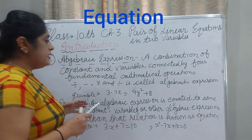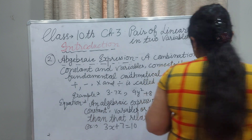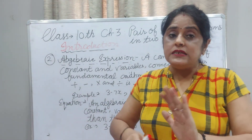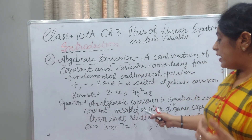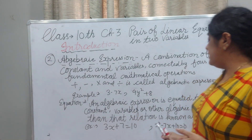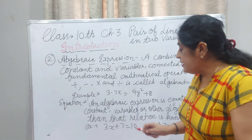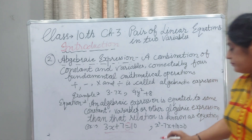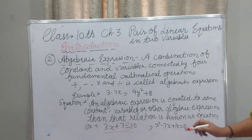Now I will tell you what an equation is. An equation is when an algebraic expression is equated — meaning you write an equal sign — to some constant, variable, or other algebraic expression. That relationship is called an equation. For example, 3X + 7 = 10, or X² − 7X + 10 = 0.